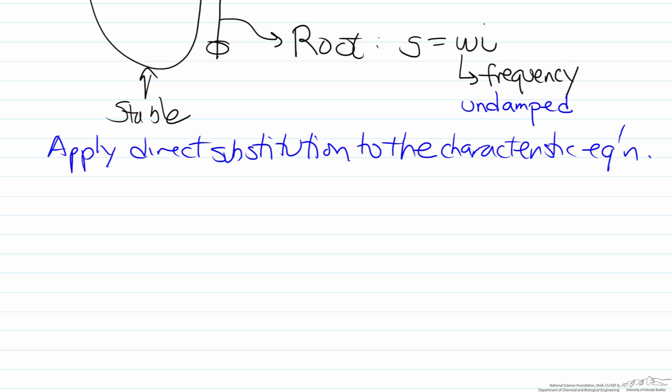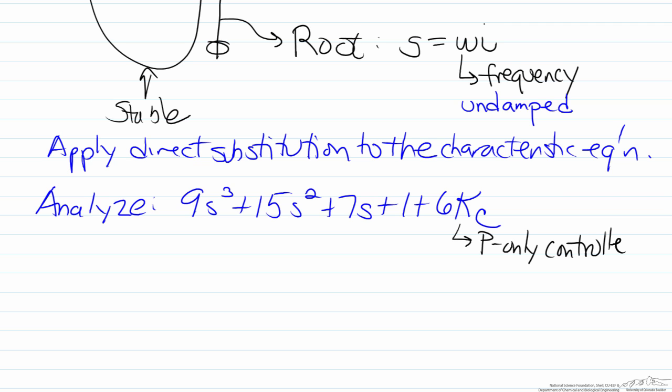So as an example we'll analyze the function 9s cubed plus 15s squared plus 7s plus 1 plus 6kc. We have a P only controller for we have kc present but no signs of tau i or tau d.